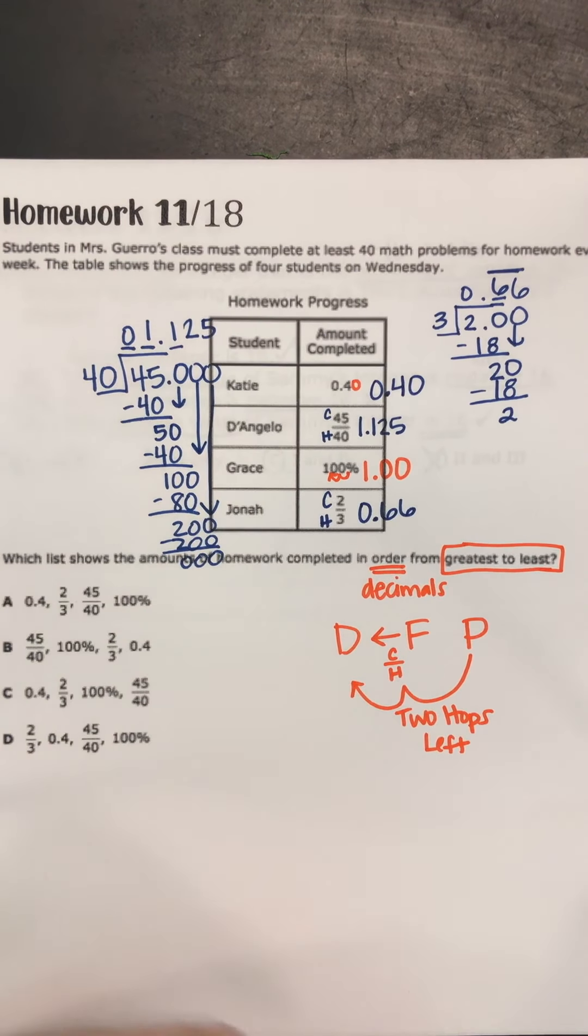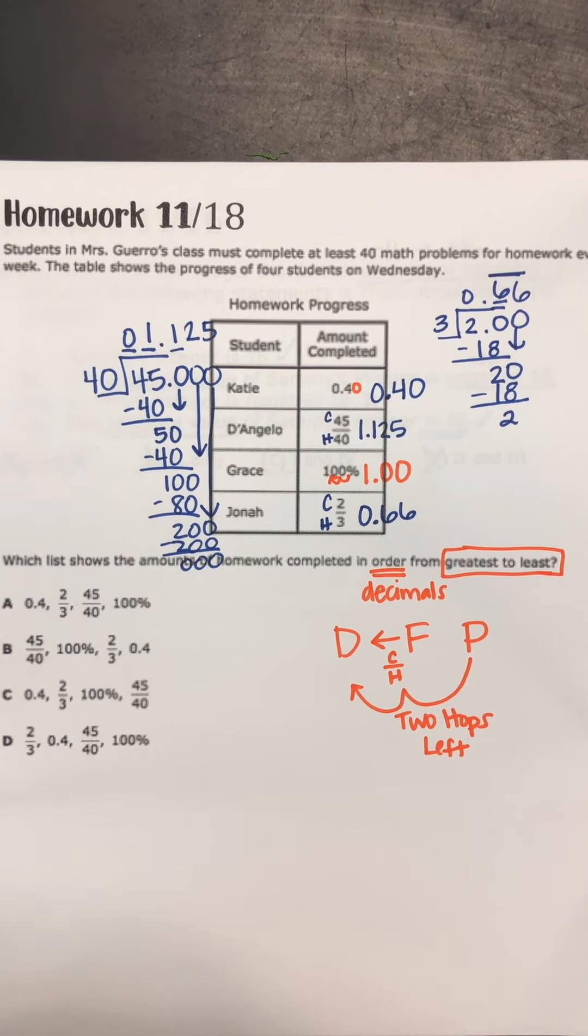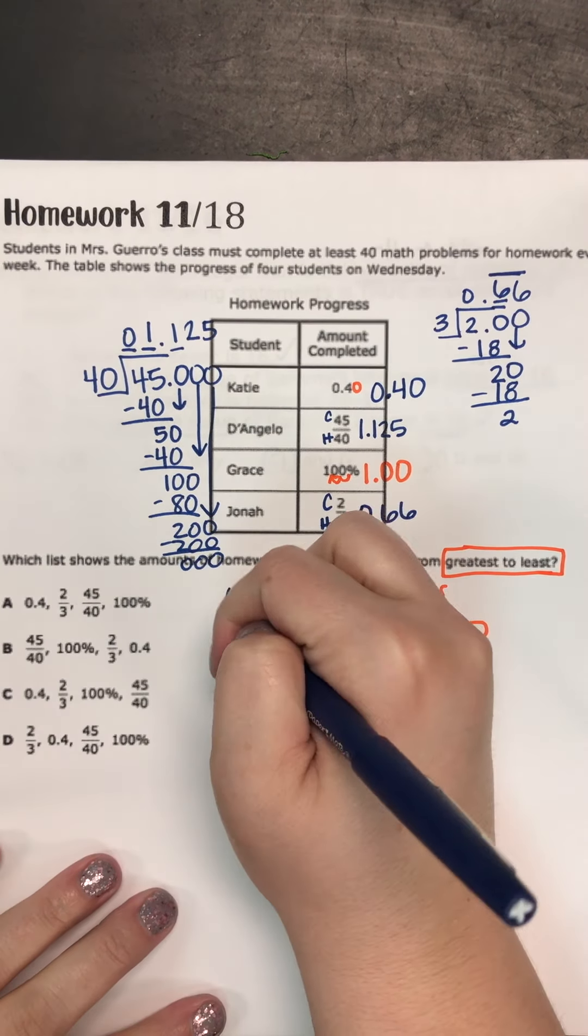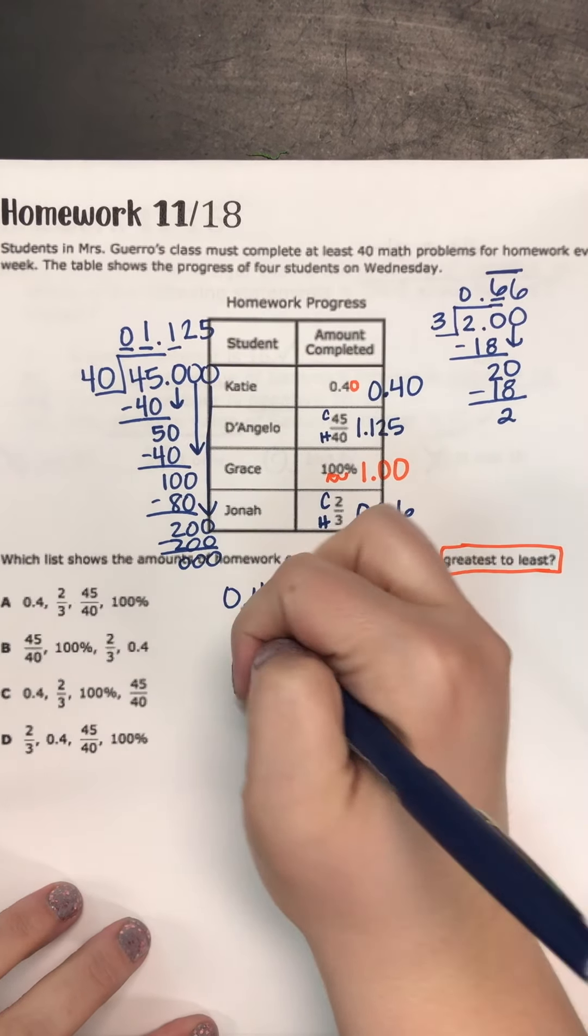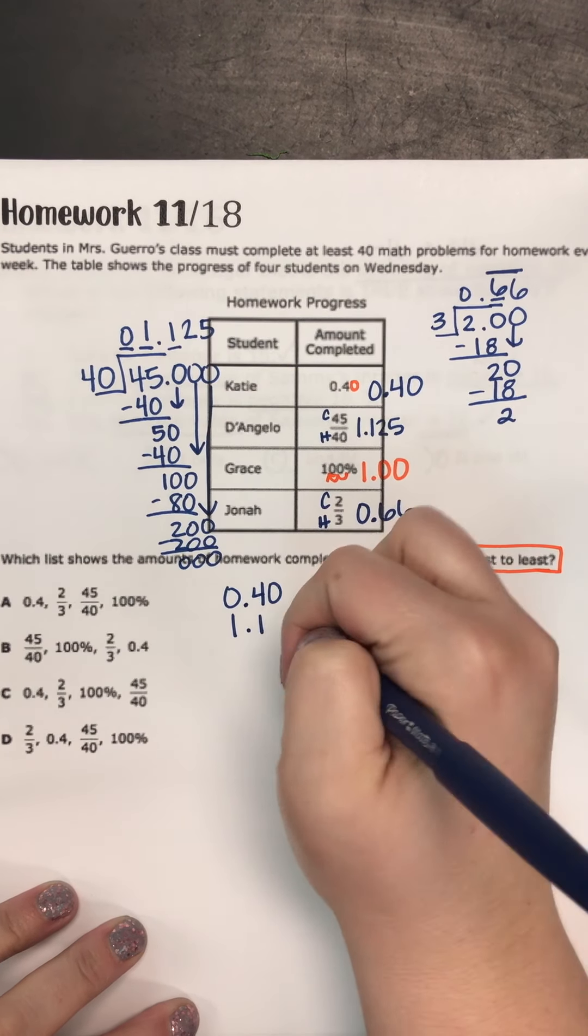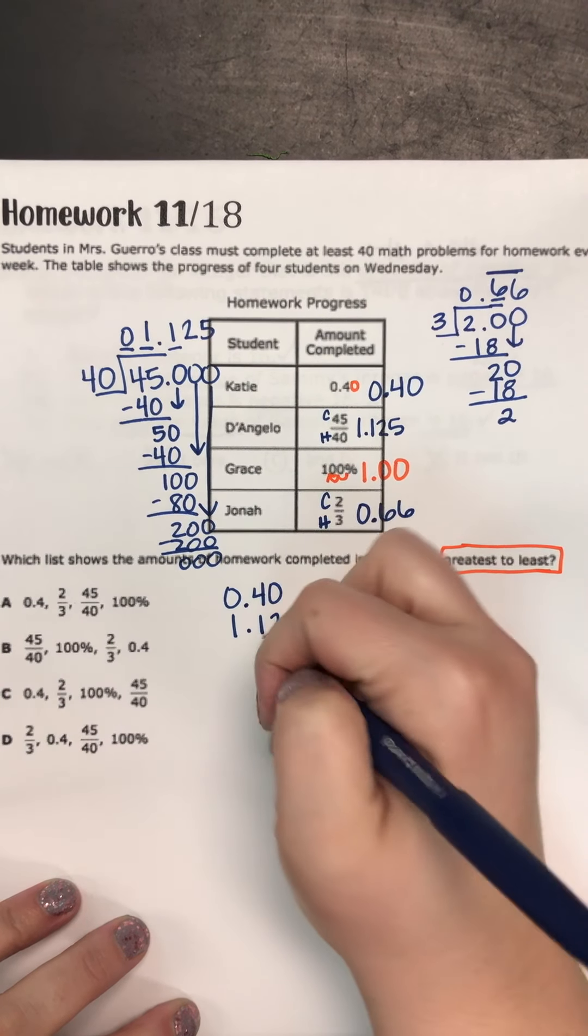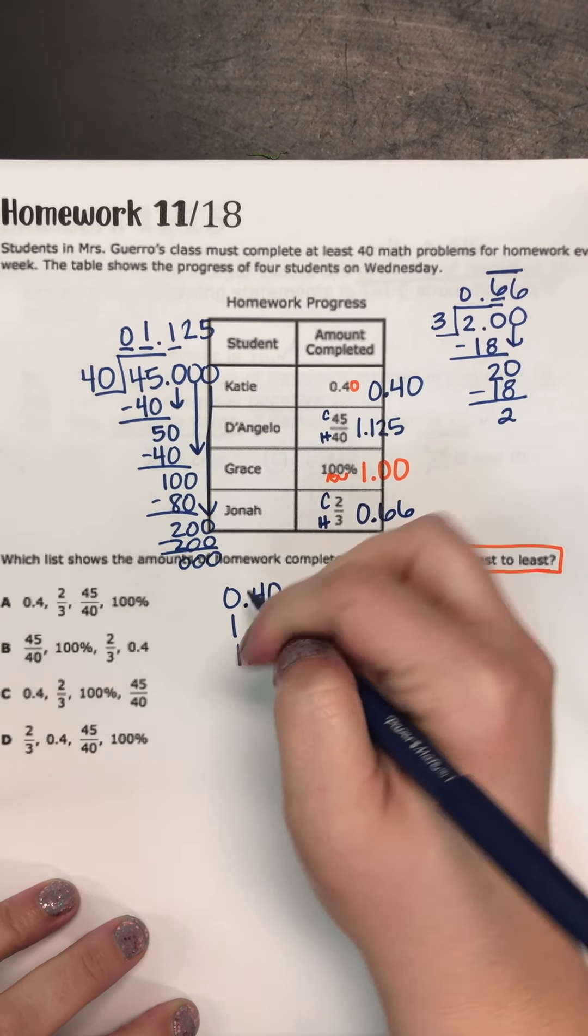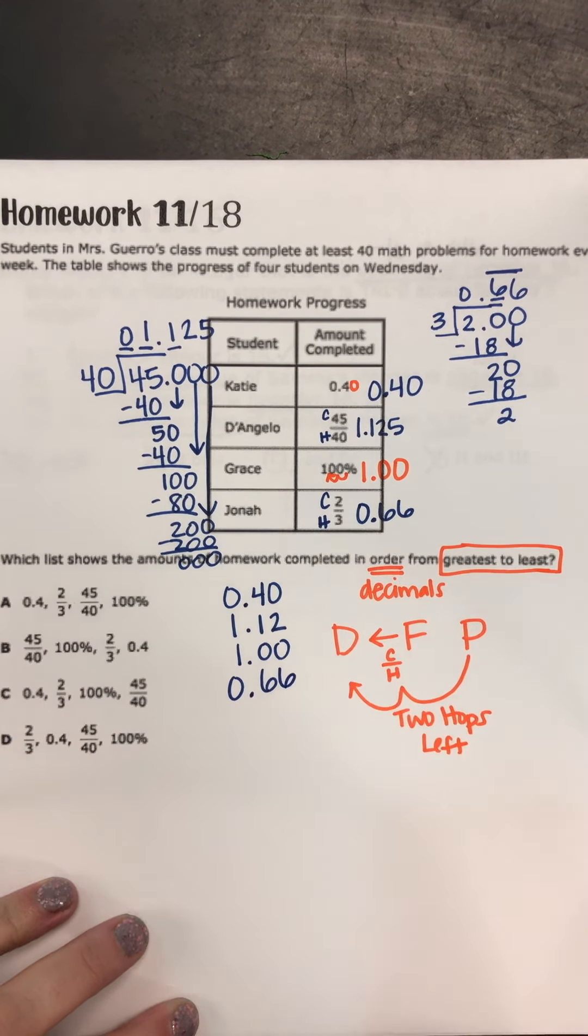So now we're ready to compare. So it says the greatest. So we're looking for the biggest number. And remember, if you want to, you can stack them like stack your decimals. So we have 40 cents, 1.1. And just because I'm looking at money, I'm going to leave it at the 1.2. I have one even. I'll notice all my decimals are lined up. And then I have a 0.66.